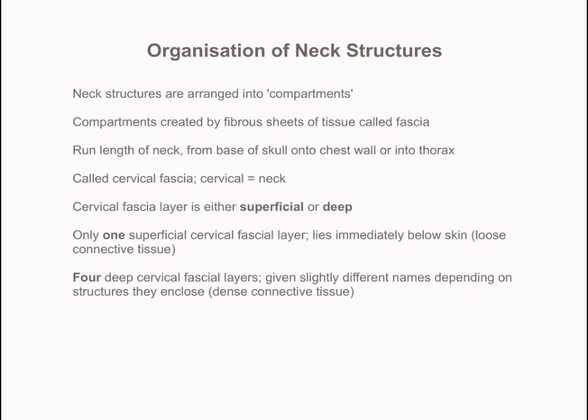There are four deep cervical fascia layers, and these are, as the name suggests, deeper within the neck than the superficial cervical layer. These four are given different names depending on the structures that they enclose. They're much more dense in terms of the arrangement of the connective tissue and much tougher than the fascial layer that we see most superficially.